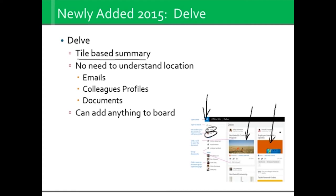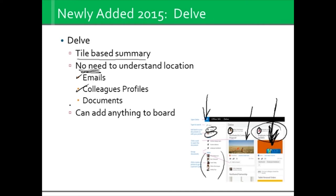If you are working on the employee handbook with another person and you can see that there are other user accounts listed, maybe you both have permission and you're working together — then you'll find they're also listed there. So I have a chance to click on their name, look at their profile, read the About Me, and see what other things they're working on that I might have permission to. You don't have to understand location — it doesn't matter where the employee handbook is located, whether it's in my OneDrive or someone else's. That's a quick link to open it right back up. Delve also allows you to look at emails, different profiles, different documents, and you can add anything to that board you wish.